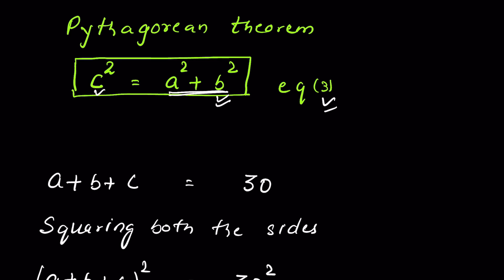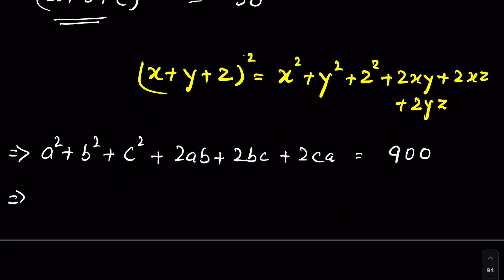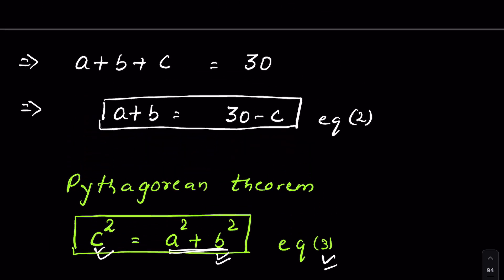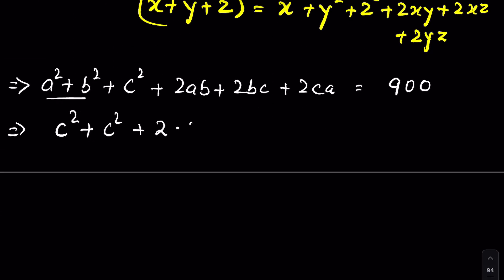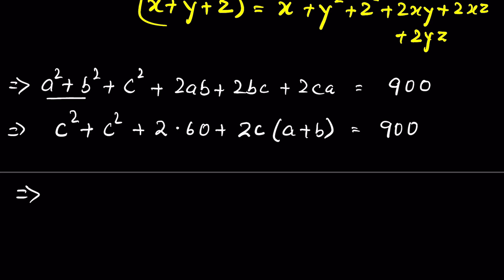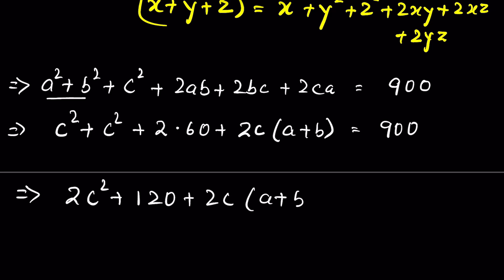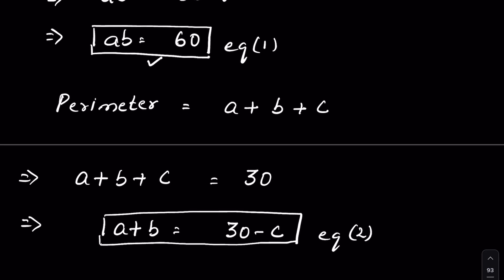From equation three, c squared equals a squared plus b squared, so we substitute a squared plus b squared with c squared. We get c squared plus c squared plus 2ab plus 2bc plus 2ca equals 900. From equation one, ab equals 60, so 2 times 60 gives 120.